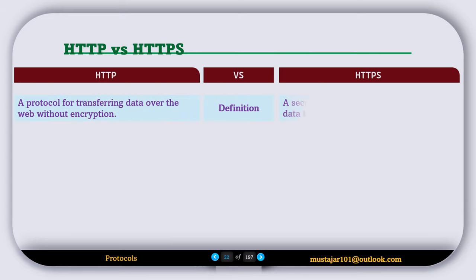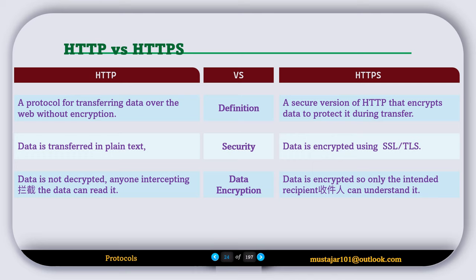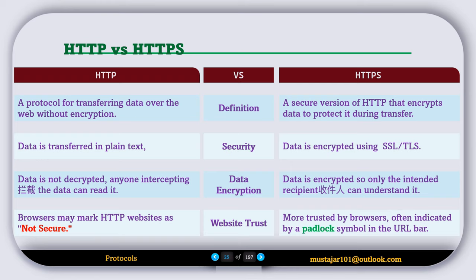Now let's compare HTTP and HTTPS. HTTP is a protocol for transferring data over the web without encryption, while HTTPS is a secure version of HTTP that encrypts the data to protect it during transfer. In HTTP, data is transferred in plain text and is not encrypted, so anyone intercepting it can read it. In HTTPS, data is encrypted using SSL and TLS, so only the intended recipient can understand it. Browsers may mark HTTP websites as not secure, while HTTPS websites are more trusted and indicated by a padlock symbol in the URL bar.